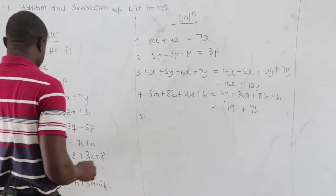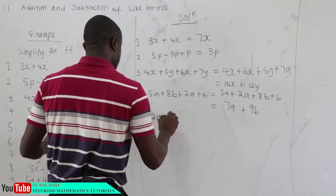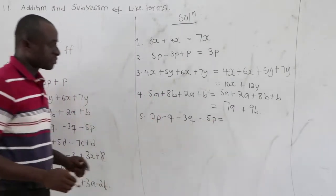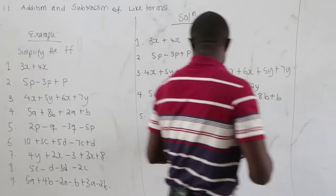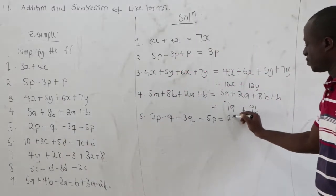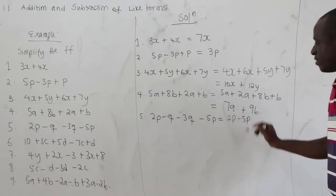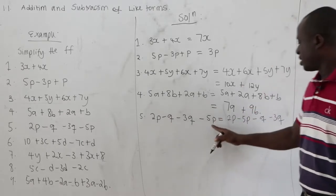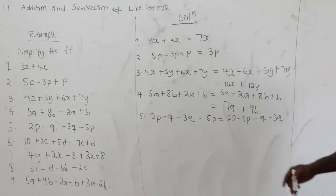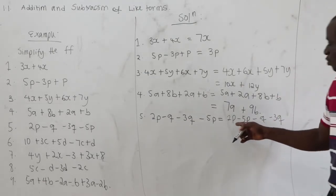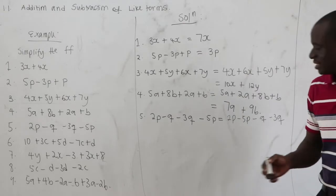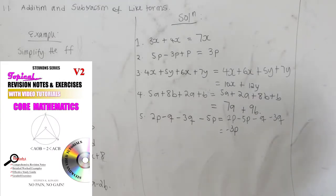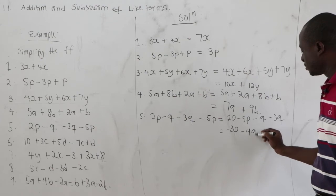The fifth question: 2p minus k minus 3k minus 5p. We group like terms: 2p minus 5p, and negative k minus 3k. We get 2p minus 5p equals negative 3p, and negative k minus 3k equals negative 4k.